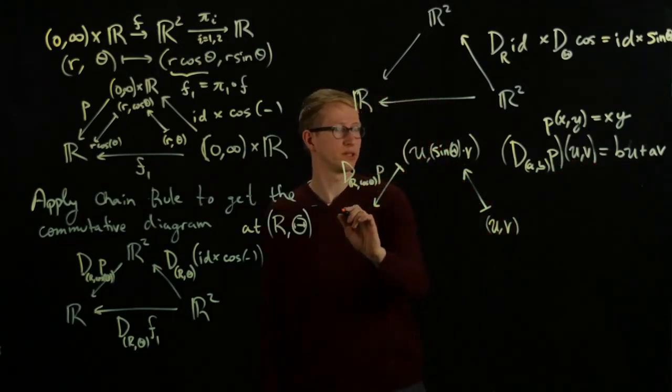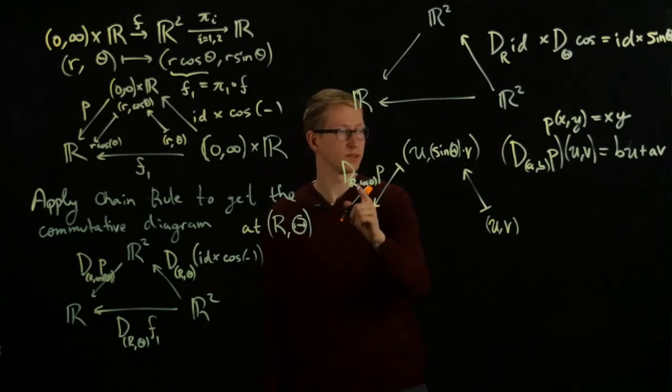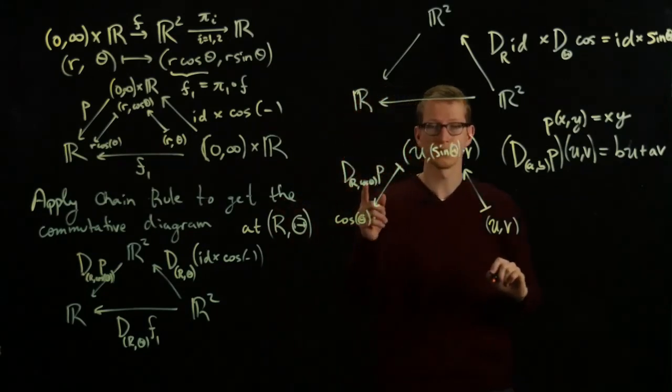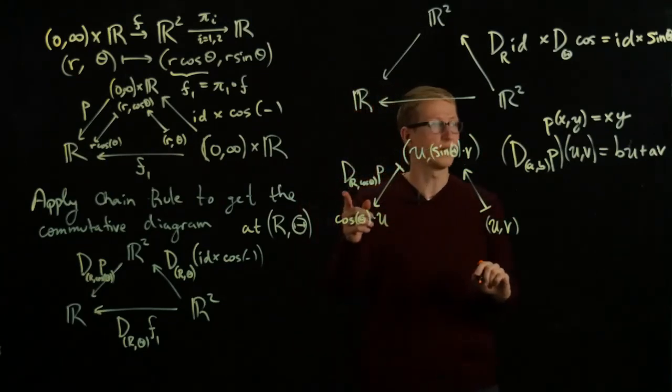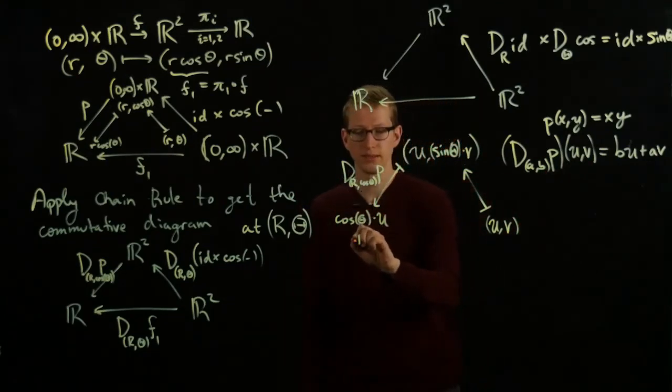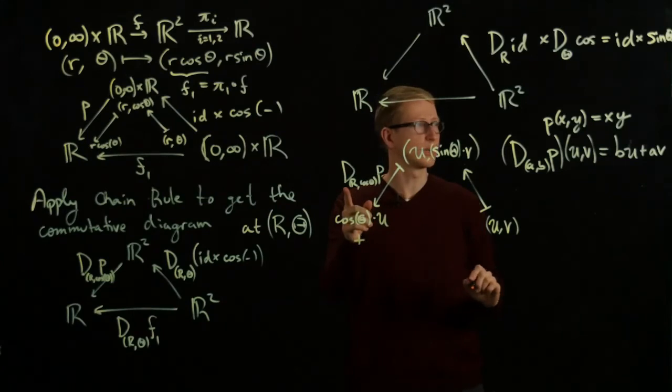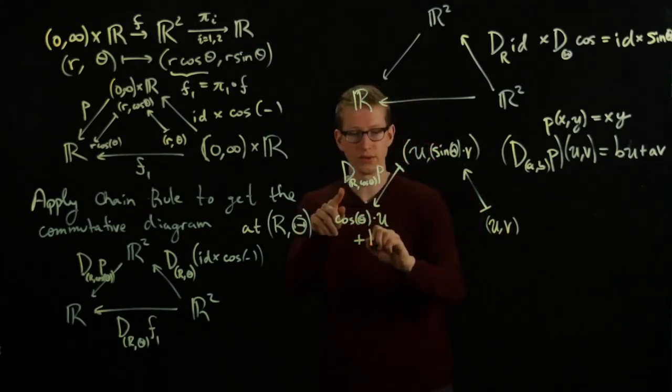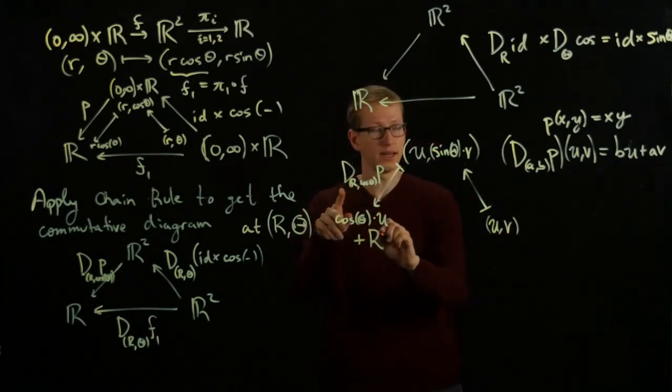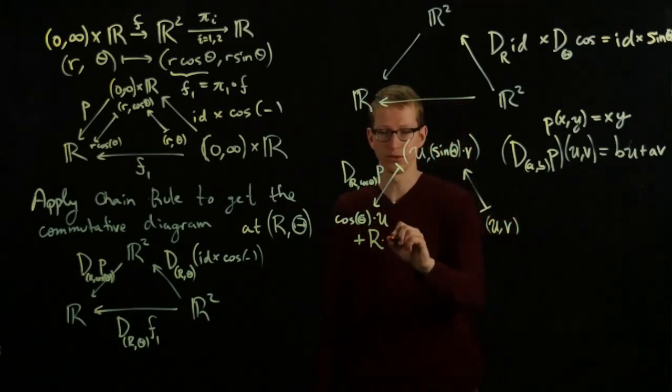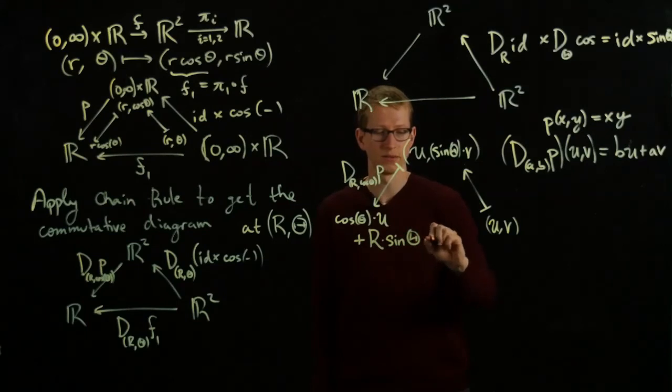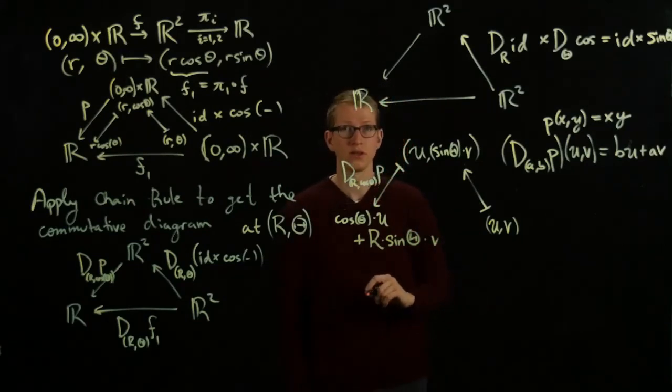Applying this formula gives us: the second component is cos θ times—so this is our B, and our U is still U, so this is U. Then our second term plus, our second term is A, and A here is capital R, times our second component here, so that's sin θ times V.